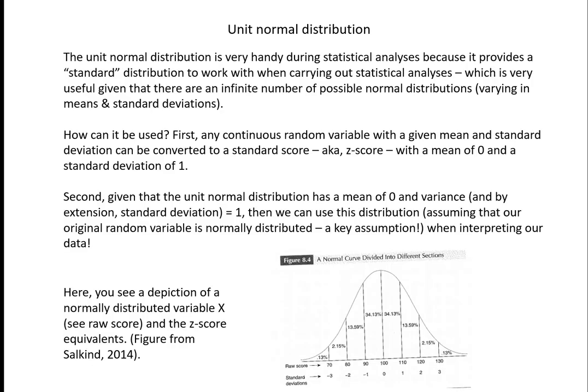The unit normal distribution is very handy during statistical analyses because it provides a standard distribution to work with. This is important because the normal distribution is actually a family of distributions, and there are an infinite number of normal distributions based on combinations of means and standard deviations. Any continuous random variable with a given mean and standard deviation can be converted to a standard score — a z-score — where the variable now has a mean of zero and a standard deviation of one, and then we can use the unit normal distribution when interpreting our data.